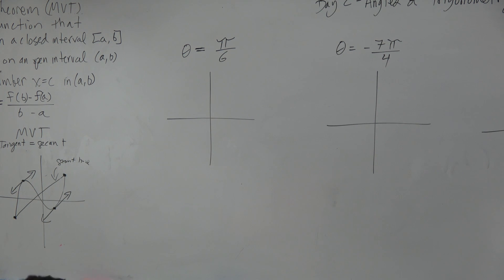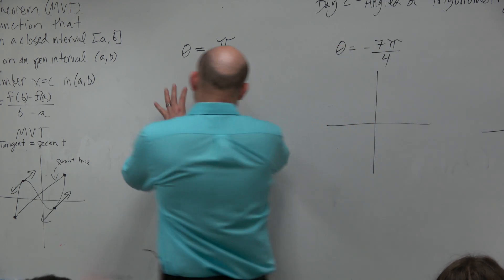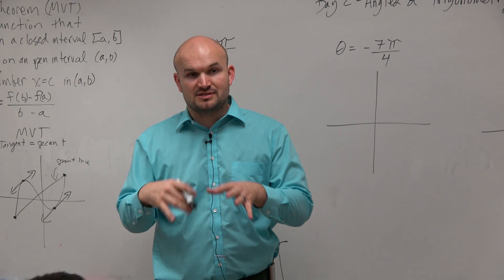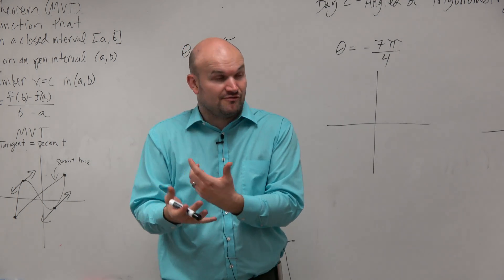through enough examples for you guys. OK. So theta equals pi over 6. Again, guys, let's start simple. What are some things we know about something in terms of pi as far as a radian?